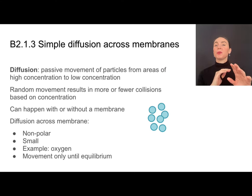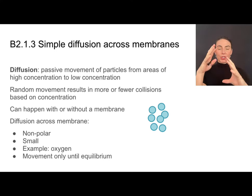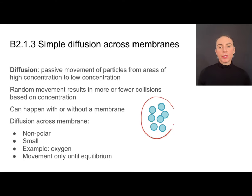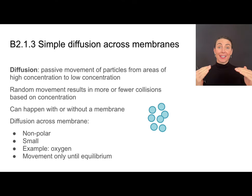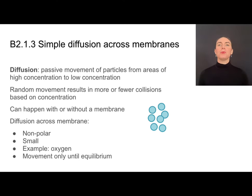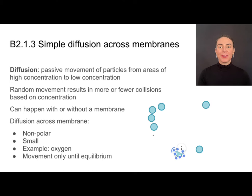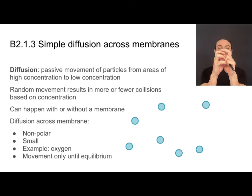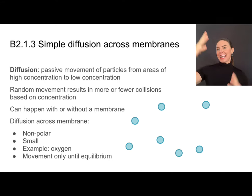It's important to remember that molecules are always in motion, and that motion results in random collisions. The closer molecules are to each other, the more frequently they collide. When molecules collide, they bounce off each other and move off into random directions. This causes molecules to spread out — going from where they are really crowded to where they are less crowded. That is diffusion.